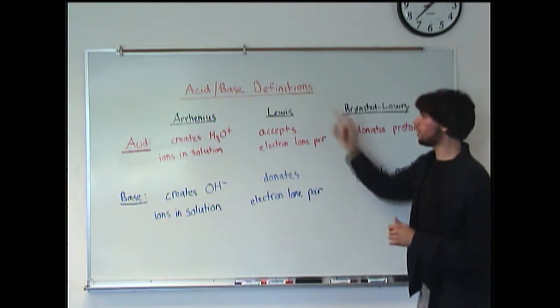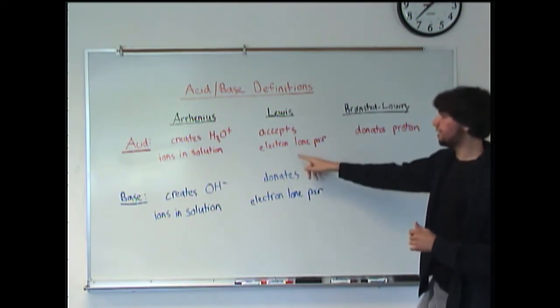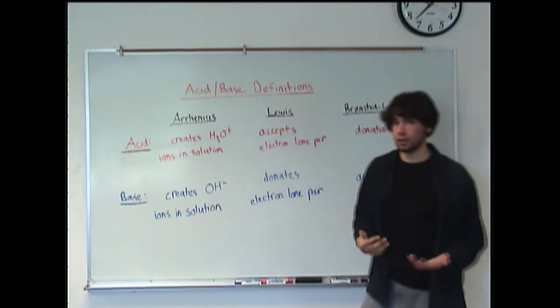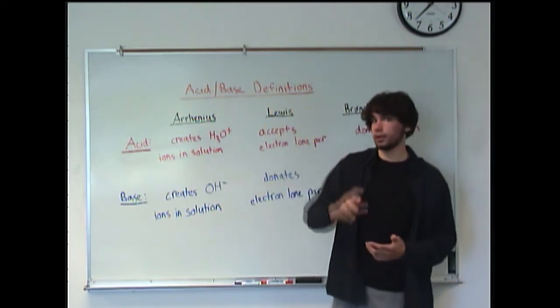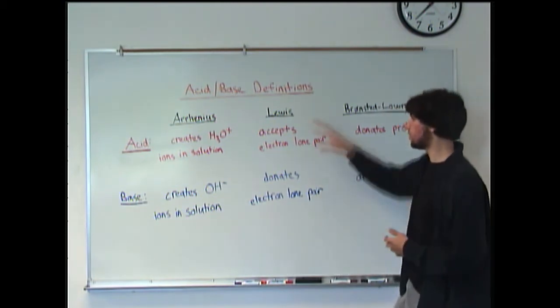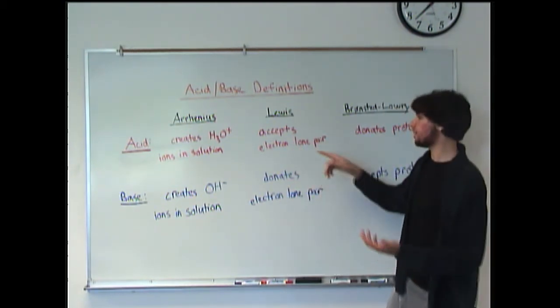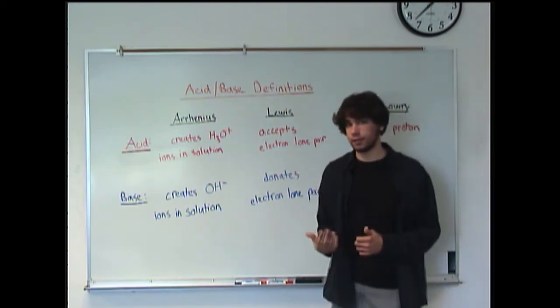The next guy to come along was Lewis. And he said that an acid is going to accept an electron lone pair. If you remember Lewis structures, you know, how you had the lone pairs and bonding and all that. That's basically what he was using to explain acids and bases. So his definition is that it will accept lone pairs of electrons.